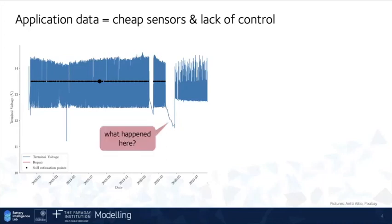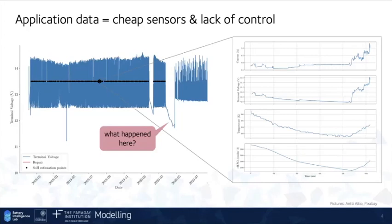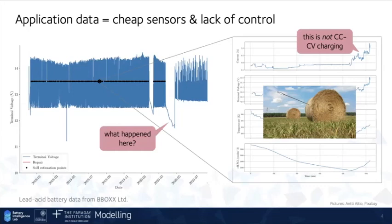If we zoom in, we can see the current voltage temperature and state of charge changing over a short period of time. And you could see that it's still quite messy. We don't have kind of controlled CCCV charging. These systems are charged from solar. So it's a difficult problem. And I'd say that trying to diagnose battery state of health in this kind of scenario is a bit like searching for a needle in a haystack, but without even fully knowing what a needle actually looks like.